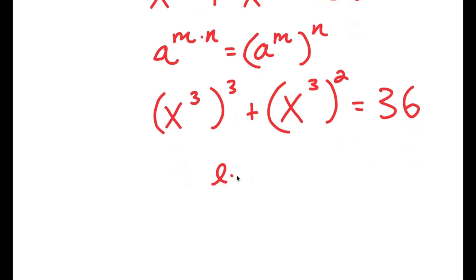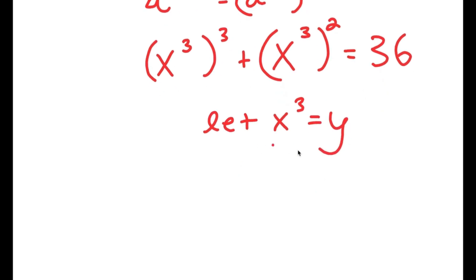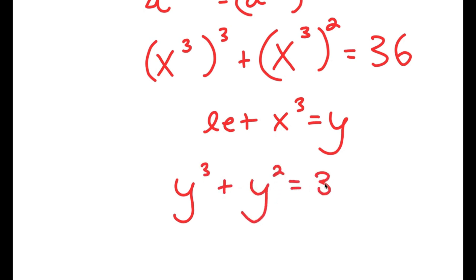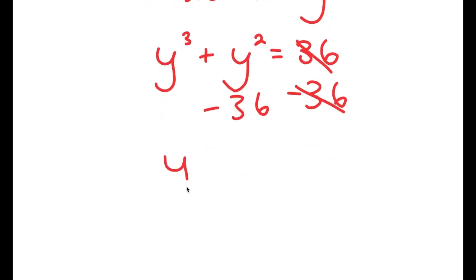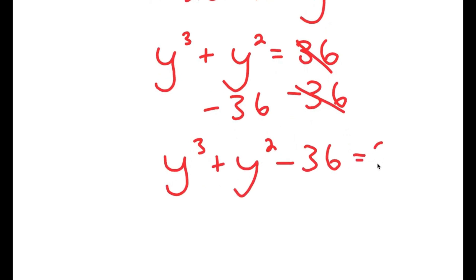Now I'm going to let x to the power of 3 equal the variable y. So if I substitute y for x to the power of 3, I get y to the power of 3 plus y squared is equal to 36. And if I subtract 36 on both sides, I get y to the power of 3 plus y squared minus 36 is equal to 0.